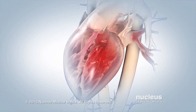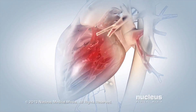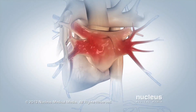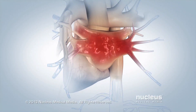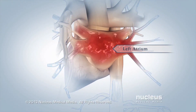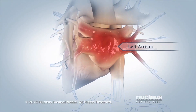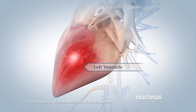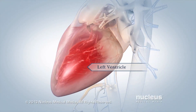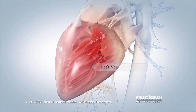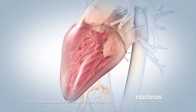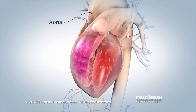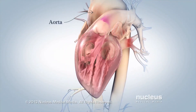On the left side of your heart, oxygen-rich blood from your lungs flows through your pulmonary veins into your left atrium. The blood then moves into your left ventricle, which contracts and sends blood out of your heart, through the aorta, to feed your cells and tissues.